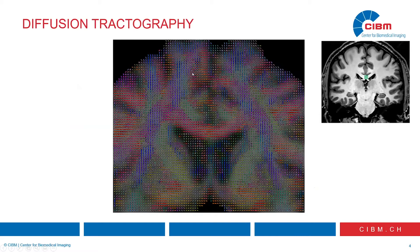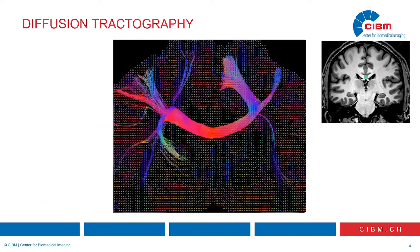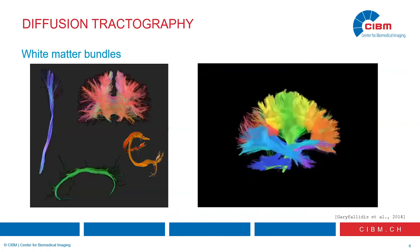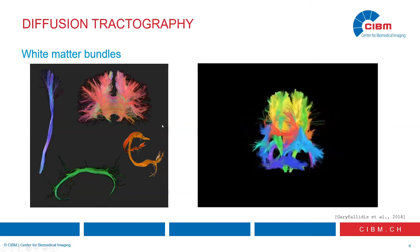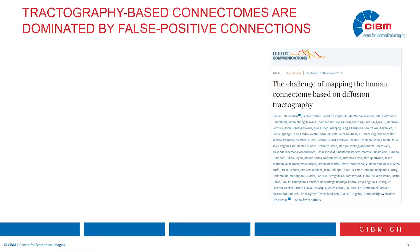Here is a coronal section of the human brain where you can see in every voxel the main orientation of the white matter fibers. Tractography connects those local orientations to form streamlines, which approximate the trajectory of the white matter fibers in the brain. If we repeat this process millions of times, we obtain millions of streamlines that describe the brain's structural connectivity. From these streamlines we can segment a subset corresponding to known white matter structures, which can be used to study changes in the presence of pathology.